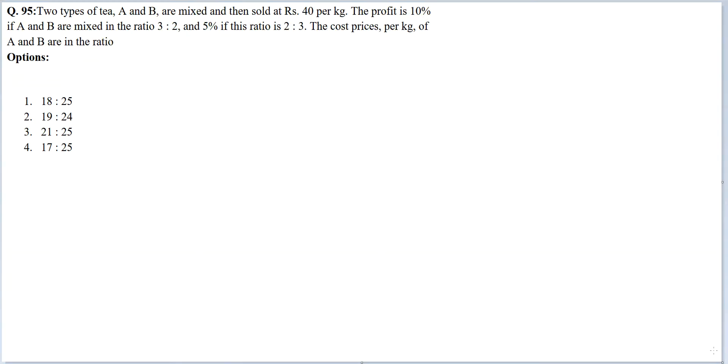Let's look at this question. Two types of tea, A and B, are mixed and then sold at Rs. 40 per kg. The profit is 10% if A and B are mixed in the ratio 3:2 and 5% if the ratio is 2:3. The cost prices per kg of A and B are in the ratio?